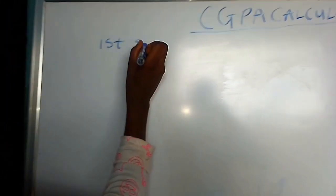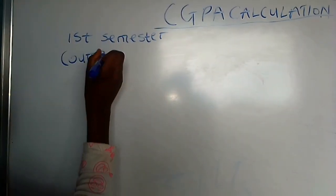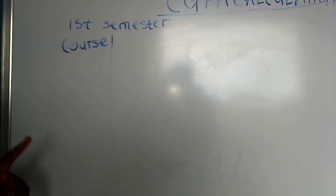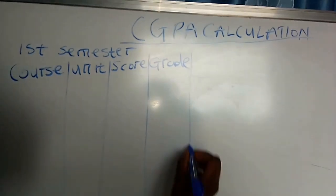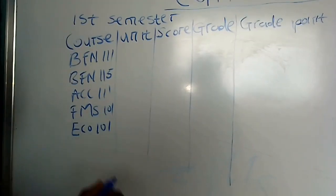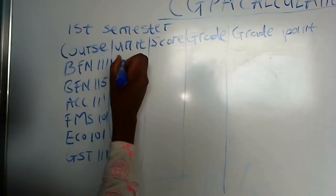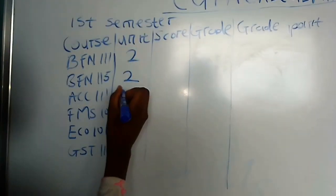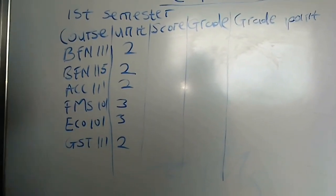We are calculating for first semester, assuming a particular person's results. You must have seen your results before you can calculate your CGPA. There is always a unit attached to each course. On the board we have: course code, unit, score, grade, and grade point. This person is doing several courses. Your courses might be fewer or more than this — it's all in your handbook. The units are: 2, 2, 2, 2, 3, 3, 2.